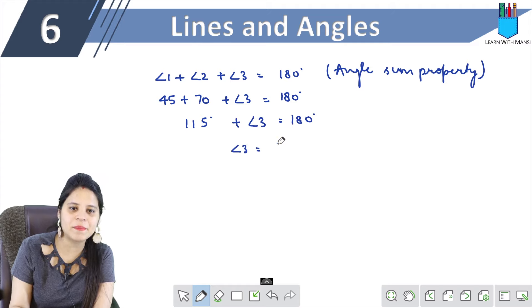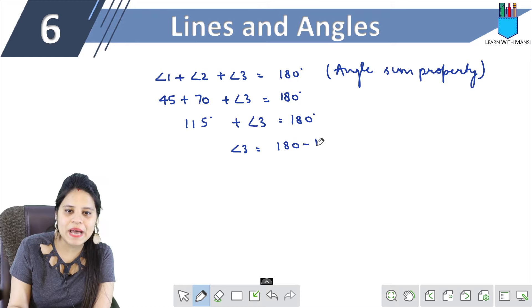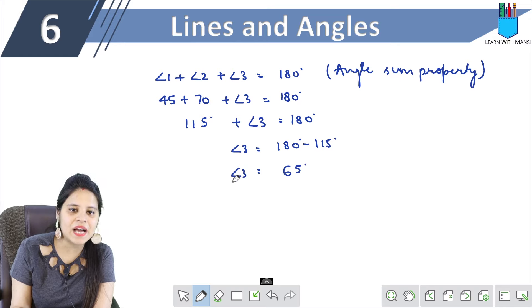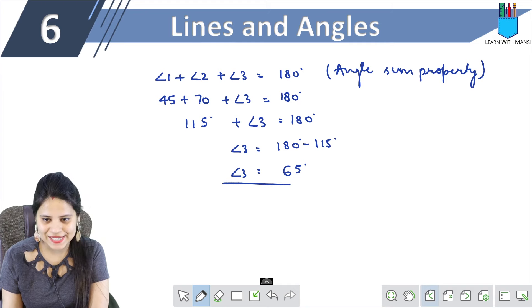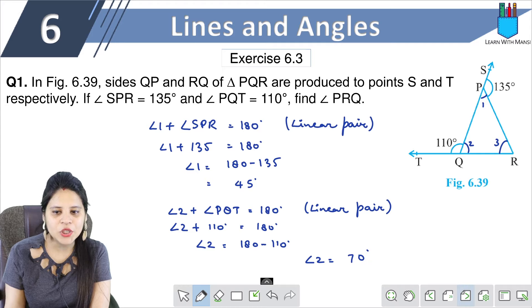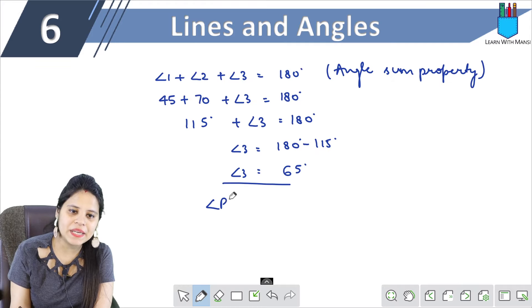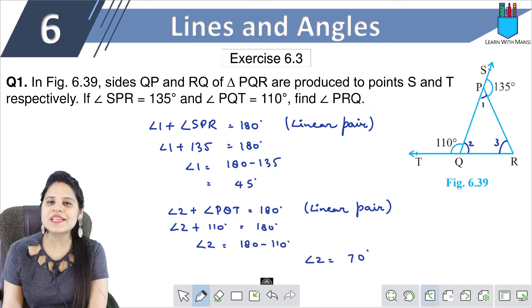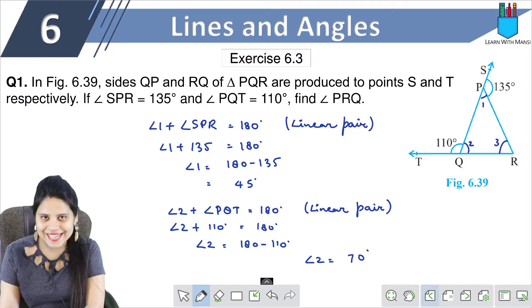So angle 3 we will get by subtracting from 180 degrees. 180 minus 115 gives us 65 degrees. So angle 3 is 65 degrees. This was the first question of exercise 6.3. Now let's go to our next question.